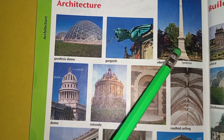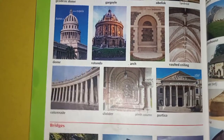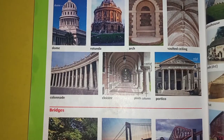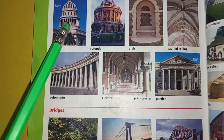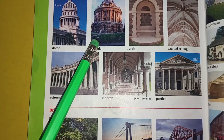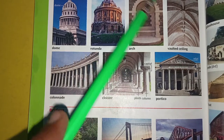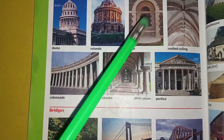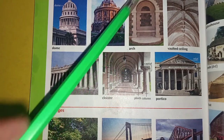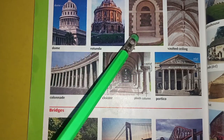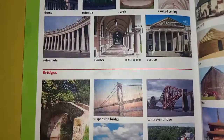This column is called obelisk, and here we have other beautiful pictures of these architecture designs. This is called dome. Rotunda — this is called rotunda. Arch — this type of entrance or exit space is called arch. Vaulted ceiling — this is called vaulted ceiling.